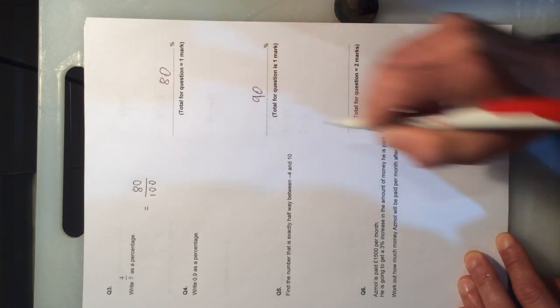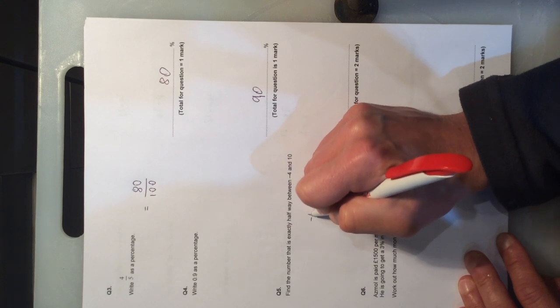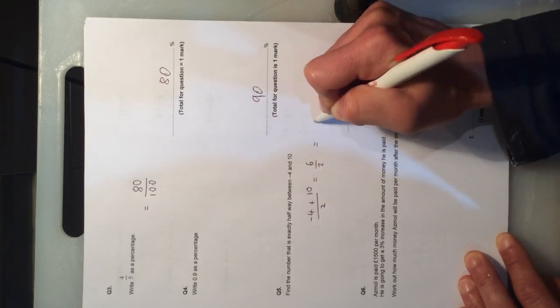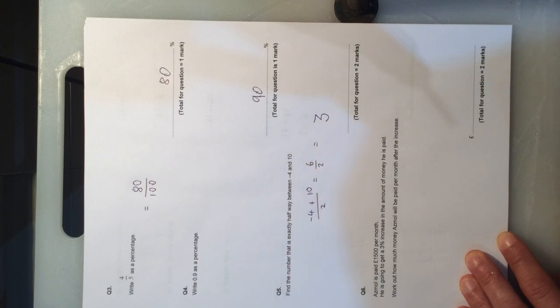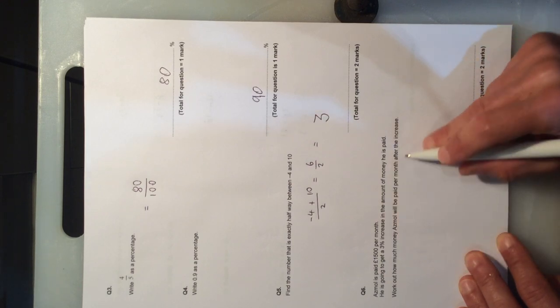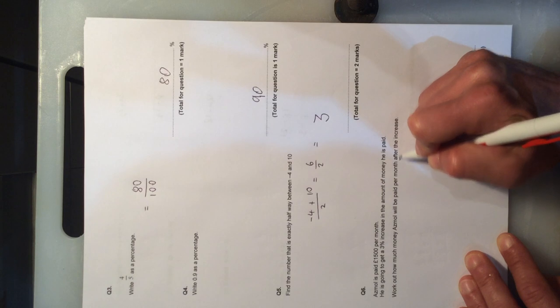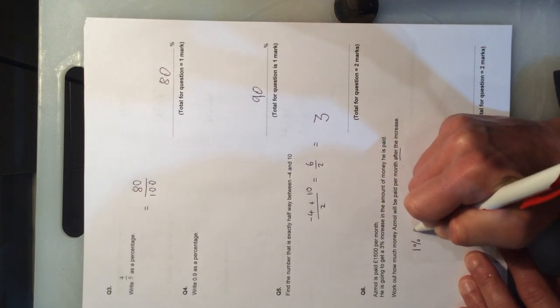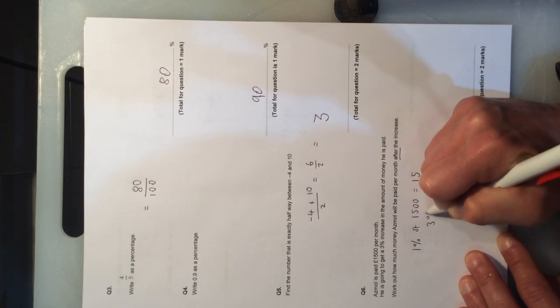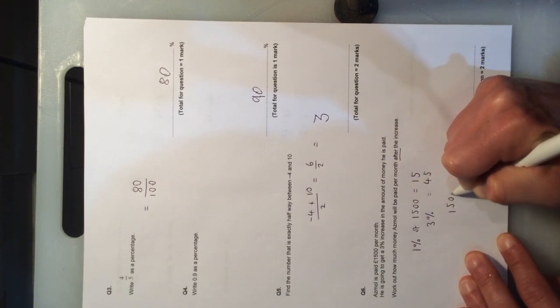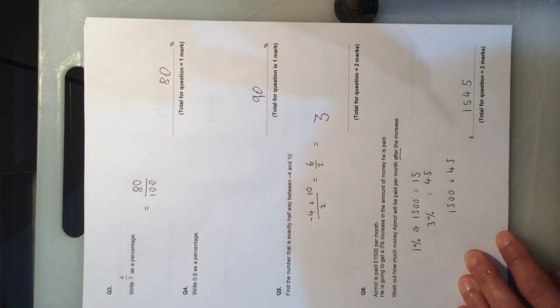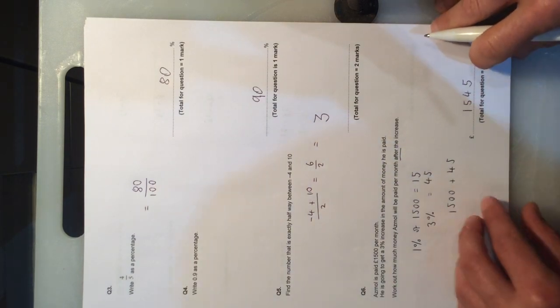As a percentage, 90%. Halfway between values - a good way of doing that is add the two values together and then divide by 2. Adding those together you get 6, divide by 2, you then get the midpoint between minus 4 and 10 is 3. This one, increase of 3%. We're going to work out 1% first of all, divide by 100, to give me what 3% would be equal to, times it by 3, and then add those two values. The original value plus the increase together gives the new value of the increased wage of £1,545.